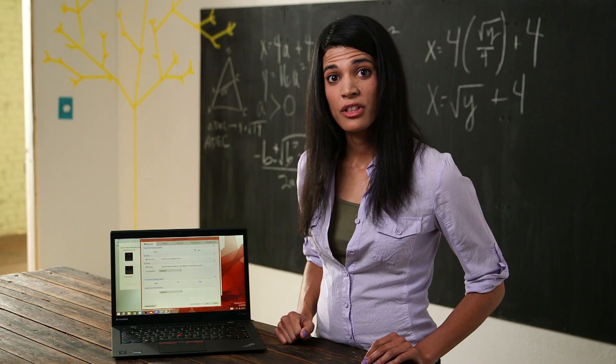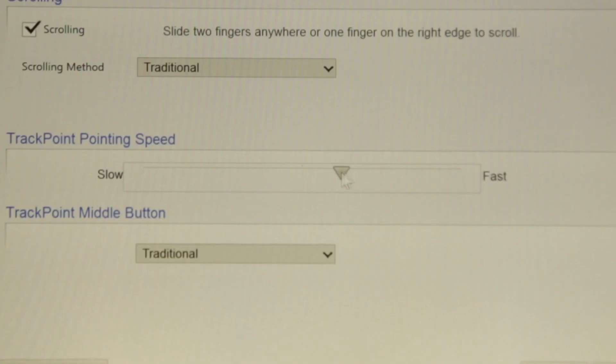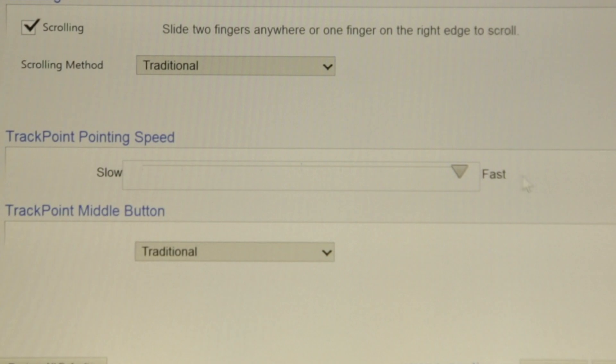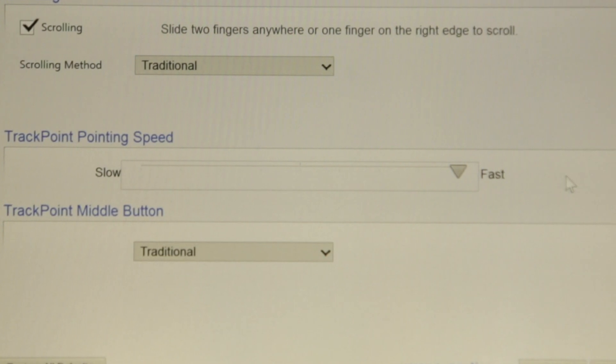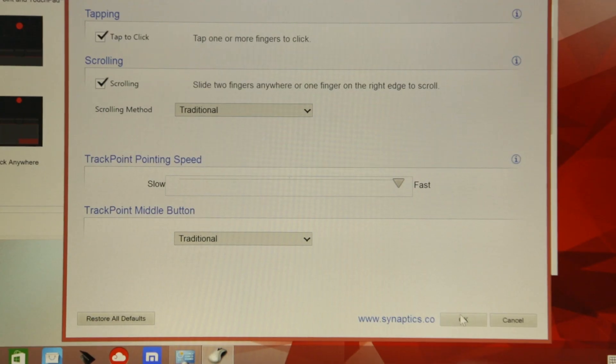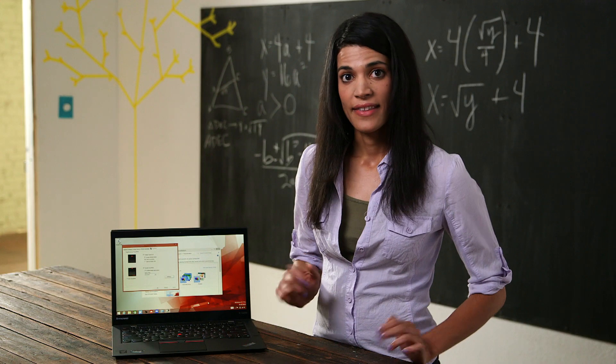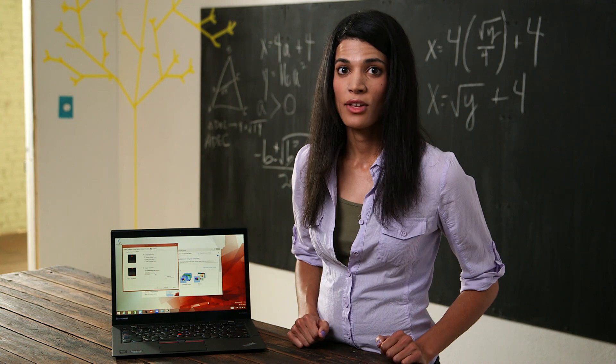And then closer to the bottom is a track point speed, increasing that speed as well. Hit OK to solidify these settings and then that's it — I'm all set.